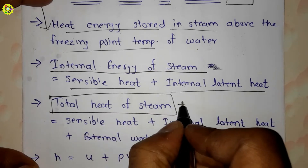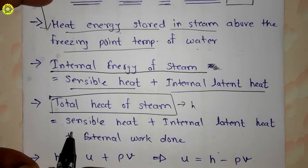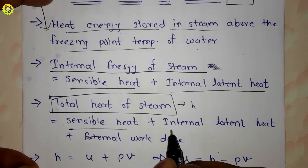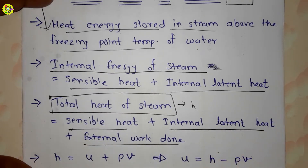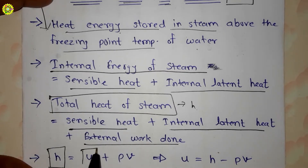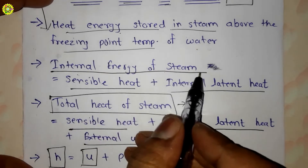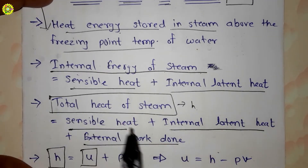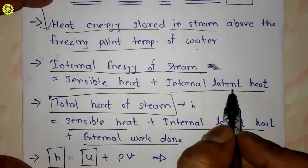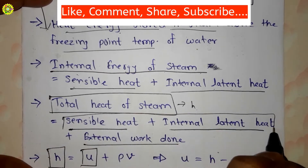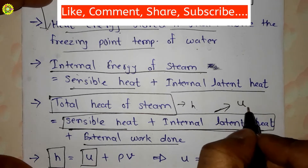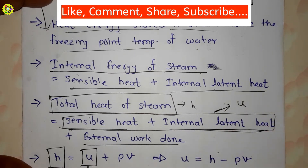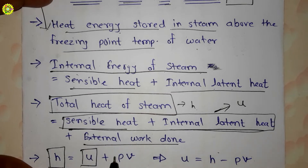Total heat of steam: h is equal to sensible heat plus internal latent heat plus external work done. Now, total heat h, and internal energy u is the addition of sensible heat and internal latent heat. So the term sensible heat plus internal latent heat represents internal energy u.